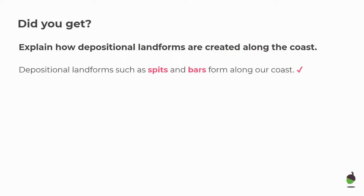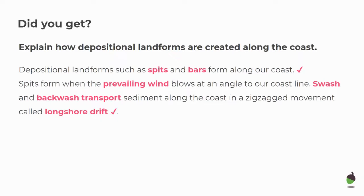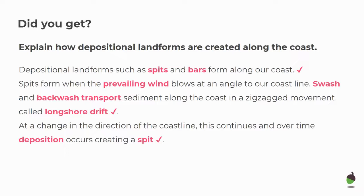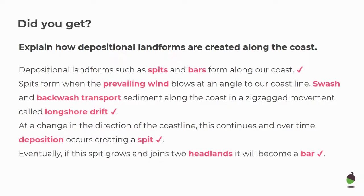Excited to see how you got on — get ready to tick them off. Depositional landforms such as spits and bars form along our coast. Spits form when the prevailing wind blows at an angle to our coastline. Swash and backwash transport sediment along the coast in a zigzagged movement called longshore drift. At a change in the direction of the coastline this continues and over time deposition occurs, creating a spit. Eventually, if this spit grows and joins two headlands, it will become a bar. For four marks, wanted to see your key words, and if you've put longshore drift or swash or backwash with their definition in brackets, then I am going to be super impressed.